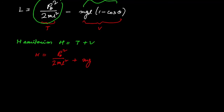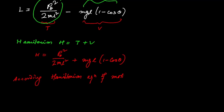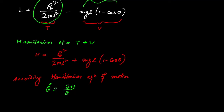The Hamiltonian is H = T + V = p_θ² / 2ml² + mgl(1 − cosθ). According to the Hamiltonian equation of motion, θ̇ = ∂H/∂p_θ. The first part is the only function of p_θ, so differentiating gives θ̇ = p_θ / ml².